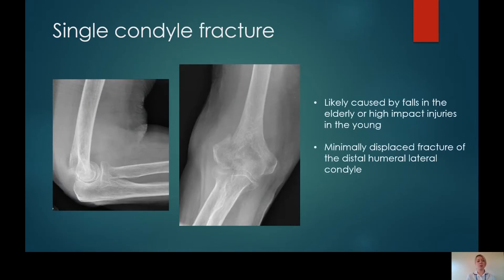This is an example of a single condylar elbow fracture. Although the lateral condyle has been fractured here, it is of course possible to fracture the medial condyle as well. These are most likely caused by falls and are quite unstable fractures.